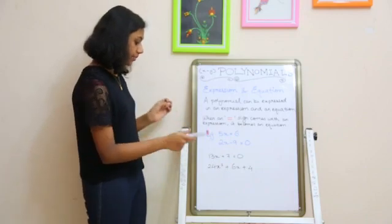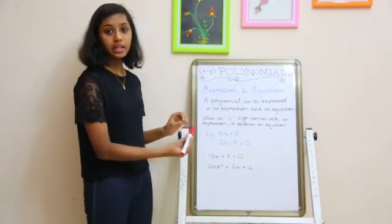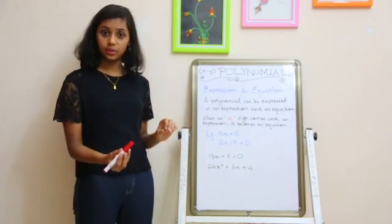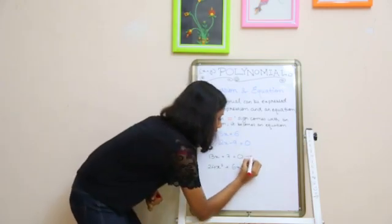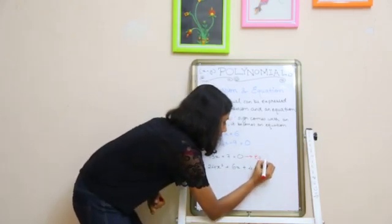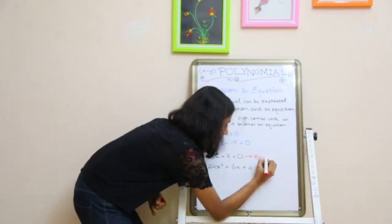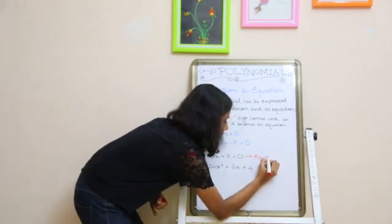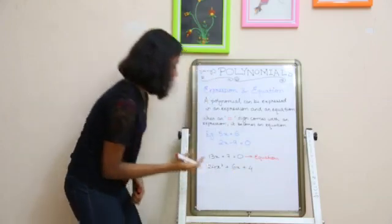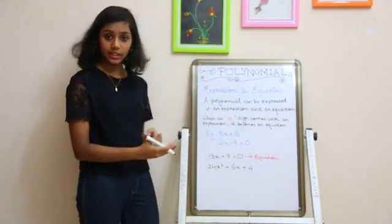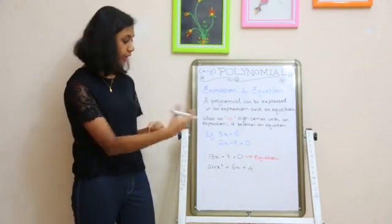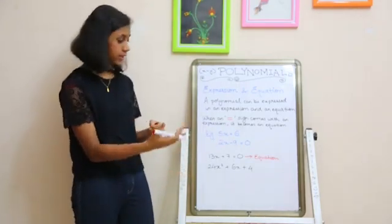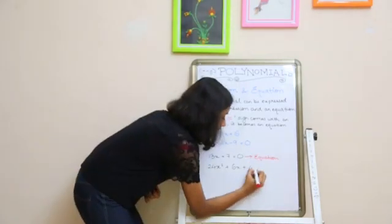Another example: 13x + 7 = 0 is an equation. And 24x² + 6x + 4 — since it is not given equal to anything — it is an expression.